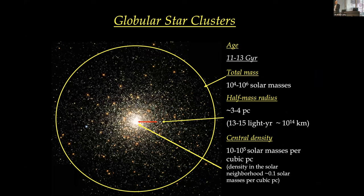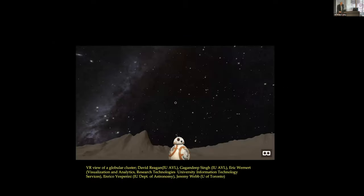They have very high densities. In a cubic parsec there are between 10 and 10 to the 5 solar masses. Just as a comparison, the density around the sun is of the order of 0.1 solar masses per cubic parsec. This is a virtual reality visualization developed in collaboration with the Advanced Visualization Lab here at IU. This is the night sky with the actual number of stars — if you go to a dark place, that's the number of stars you would see.